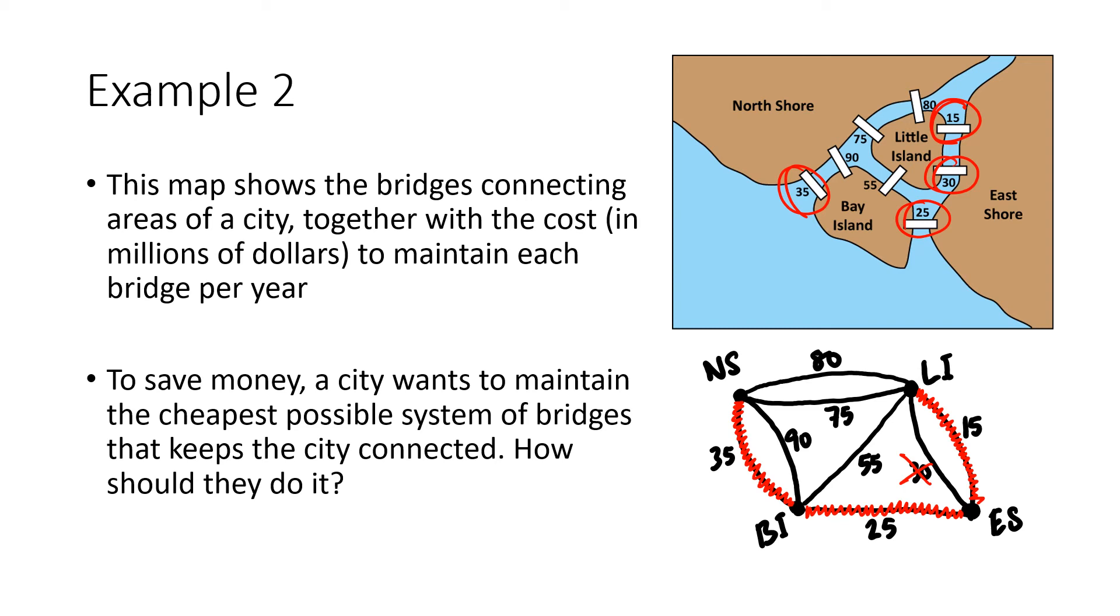When we think about efficiency, if I wanted to drive from Little Island to North Shore, I'd have to go through East Shore and Bay Island. It might look inefficient, but at least I can get there. If I used any fewer bridges than this, I wouldn't be able to get there at all. That's the idea.